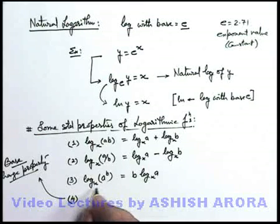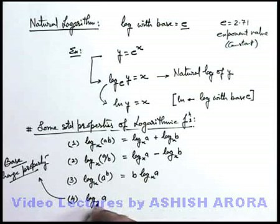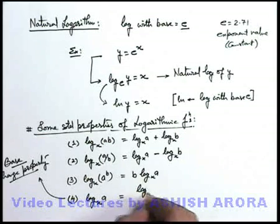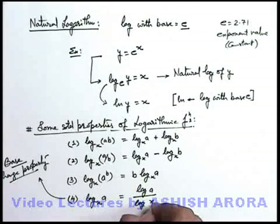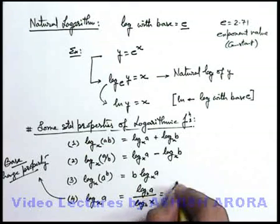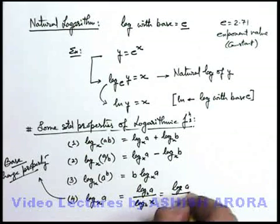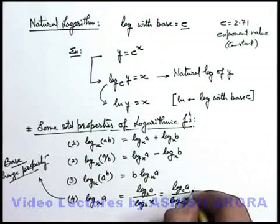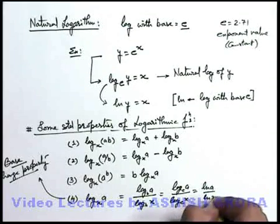This base change property is used to change the base of log functions. Like if you're given with log a to the base x, it can be written as log a upon log x. And now you can put any base, say b here. Or it can be written as log a by log x.